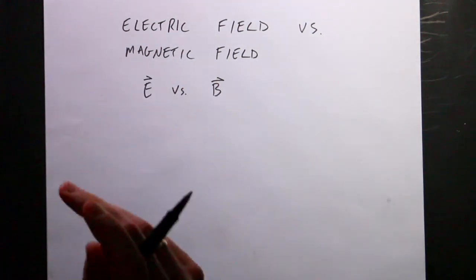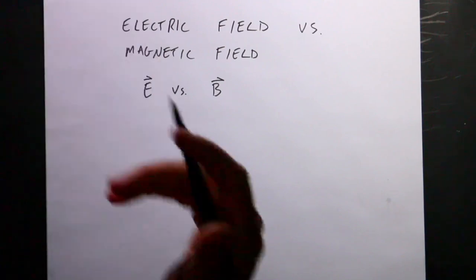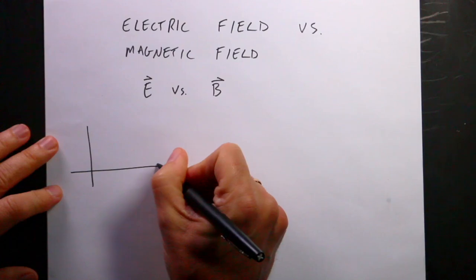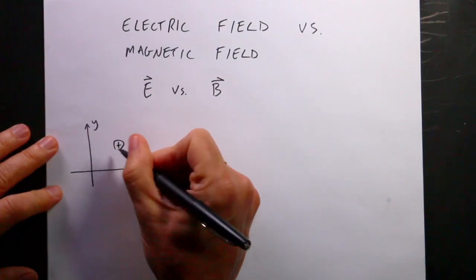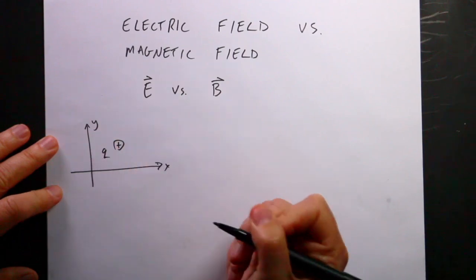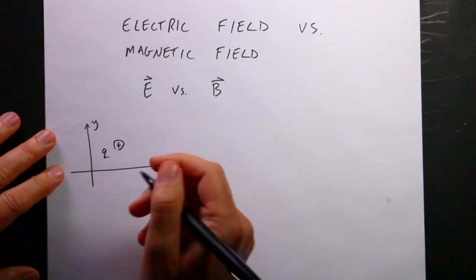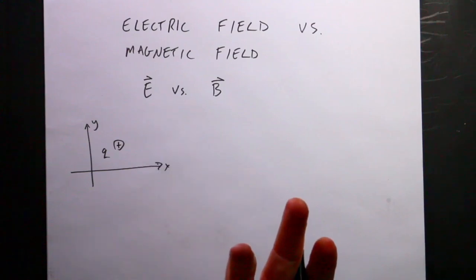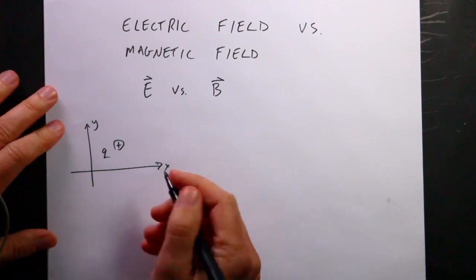The electric field — this one's not so bad and you probably already have a good feeling for it. If I have an electric charge q, it turns out that this charge makes an electric field. The electric field is a region around space in which other electric charges experience a force. You could call this Coulomb's Law.